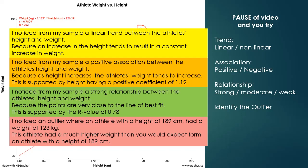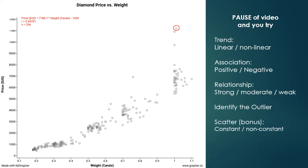There's one more example. Pause the video and look at the trend, association, relationship, and outlier — and for this one, also look at the scatter.